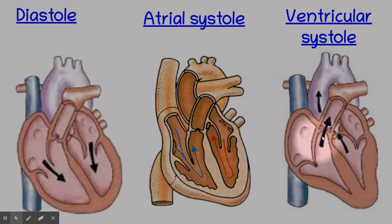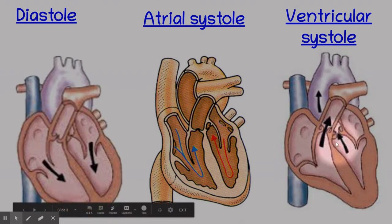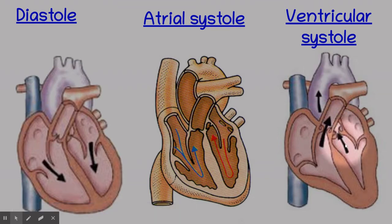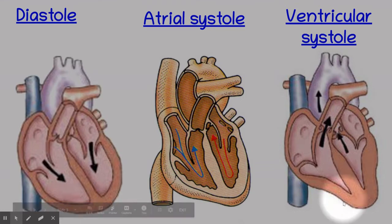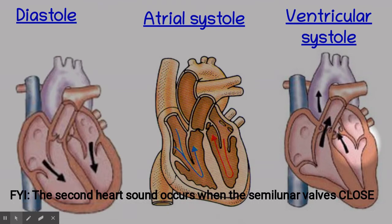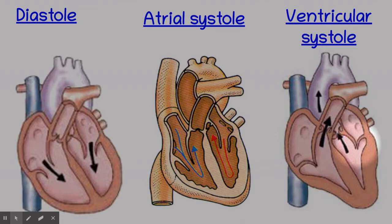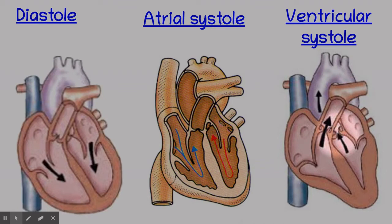The next part of the cardiac cycle is ventricular systole. This is where the atria are completely relaxed but the ventricles have started to contract. Blood is pumped from the ventricles into the aorta and the pulmonary artery. The start of ventricular contraction coincides with the first heart sound, caused by the atrioventricular valves closing, to prevent backflow back into the atria. As ventricular pressure builds, the semilunar valves are forced open, allowing blood to flow out of the heart.